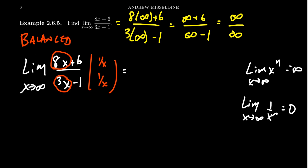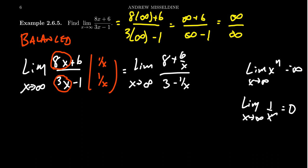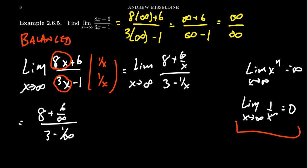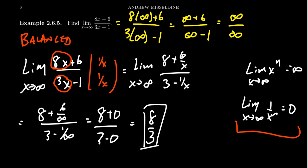When you distribute 1 over x through, you get the limit as x approaches infinity of: in the numerator, 8x times 1/x gives 8, plus 6 times 1/x which is 6/x; in the denominator, 3x times 1/x gives 3, and negative 1 times 1/x gives negative 1/x. Now plug in infinity: you get 8 plus 6/infinity over 3 minus 1/infinity. Since 1 over infinity equals 0, we end up with 8 plus 0 over 3 minus 0, which gives us 8 over 3 as the limit.